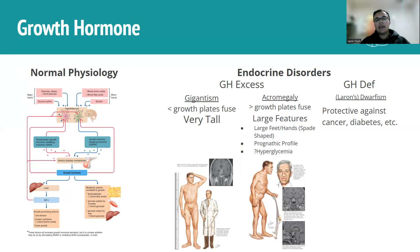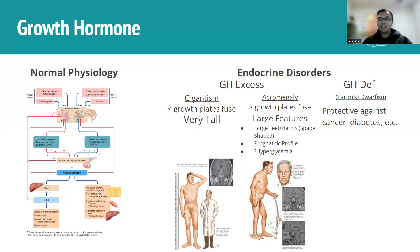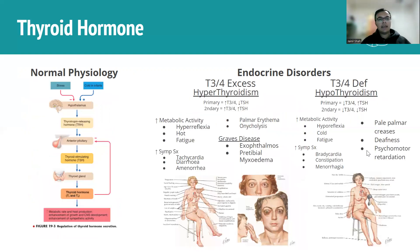Growth hormone deficiency results in a type of dwarfism known as Laron dwarfism. An important thing to remember is that it's surprisingly protective against diseases like cancer and diabetes — keep that in mind for your exam.